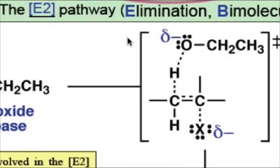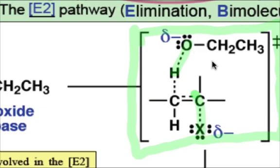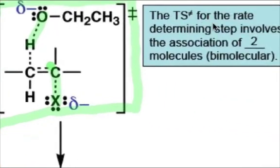The transition state for this process is shown here. What you should notice about this transition state is that the PT step and the DN step are occurring at the same time, and this transition state involves two molecules, the base and the substrate, hence the reason why we call it the E2 mechanism.